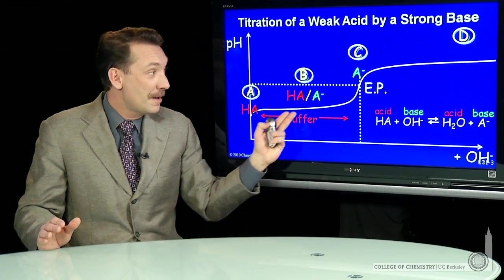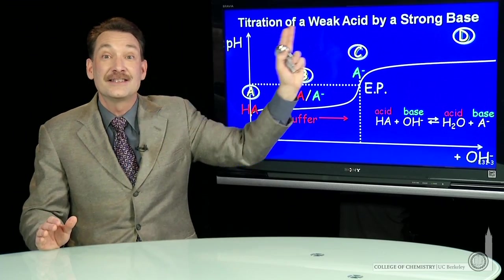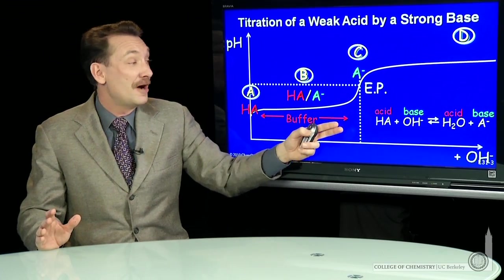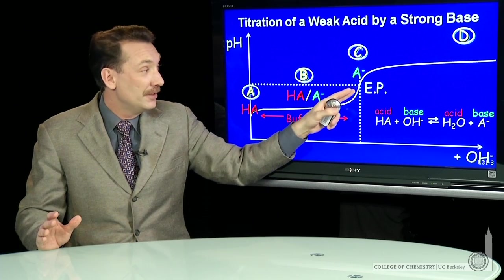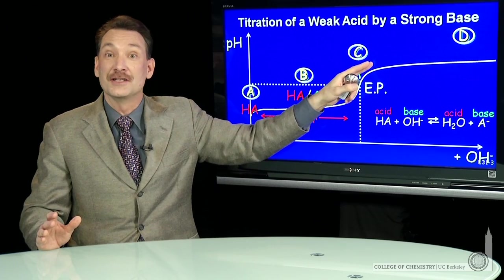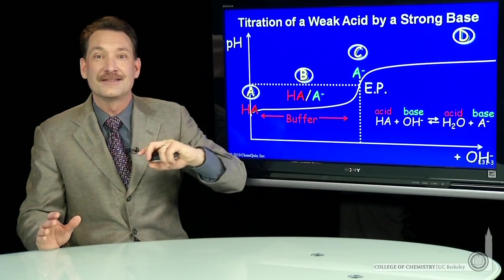These are the major points along the titration curve. At point D, it's simply a solution of strong base. You've used up all the weak acid, and now the pH rapidly changes as you continue to add strong base, which dominates the pH.